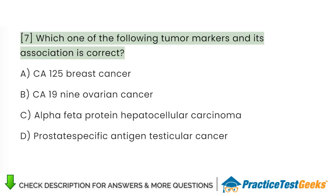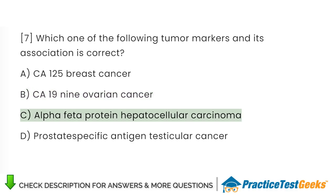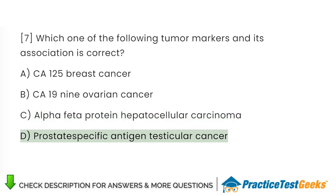Which one of the following tumor markers and its association is correct? A. CA-125 breast cancer. B. CA-19-9 ovarian cancer. C. Alpha-fetoprotein hepatocellular carcinoma. D. Prostate-specific antigen testicular cancer.